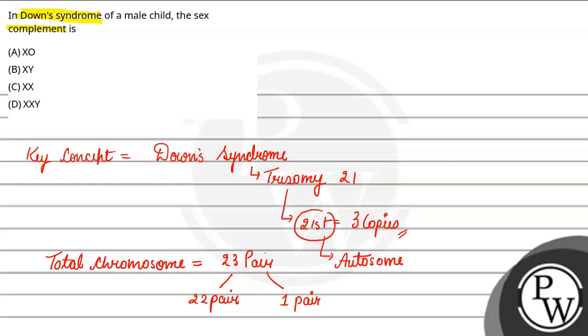This is the autosomes. If we look at the autosome at the 21st position, then what happens? That is the Down syndrome. This is what we know. Now, let's discuss the question.